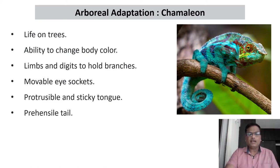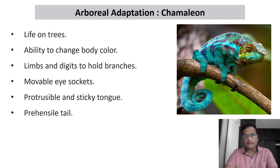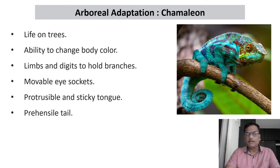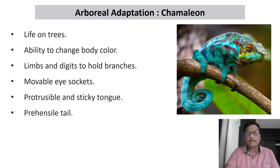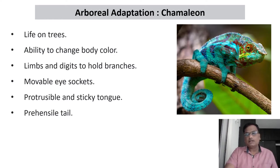Another character is the prehensile tail — a tail which is curved or coiled. Prehensile tails help the animal to hold on to the branches by coiling around them, and help maintain balance when moving or sitting on the branches of the tree. These are some of the adaptations in the chameleon, and we must also see the common characters of all arboreal animals.